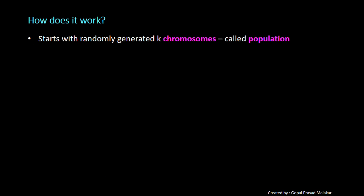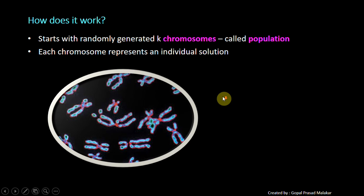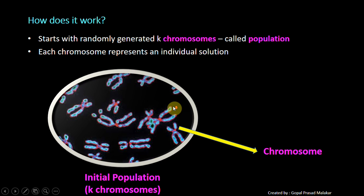Let's understand how does it work at a high level. You start with random selection of randomly generated K chromosomes, and this whole set is called population. Each chromosome actually represents an individual solution. This whole thing is population and any individual is called chromosome.